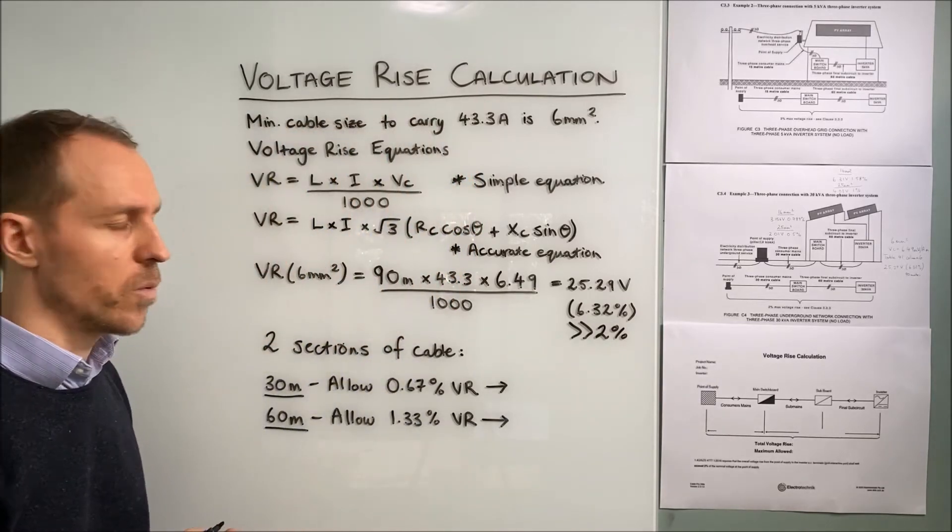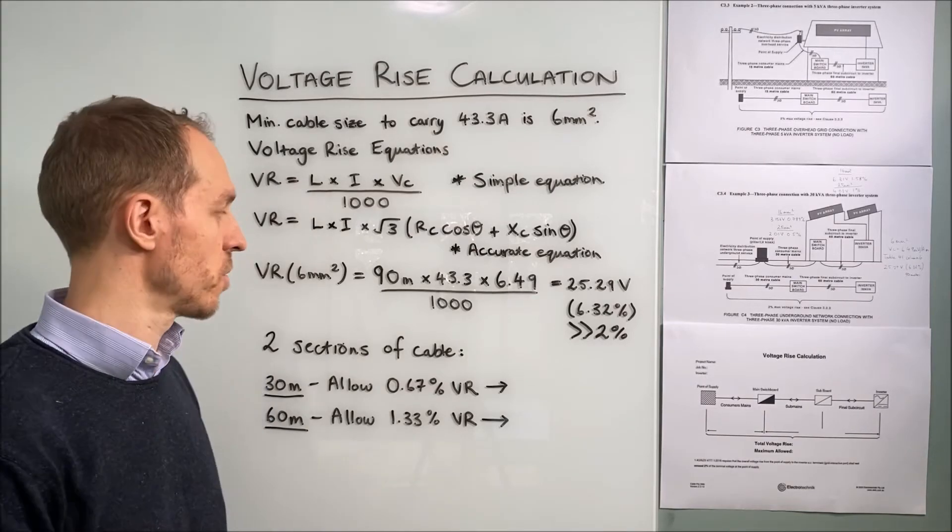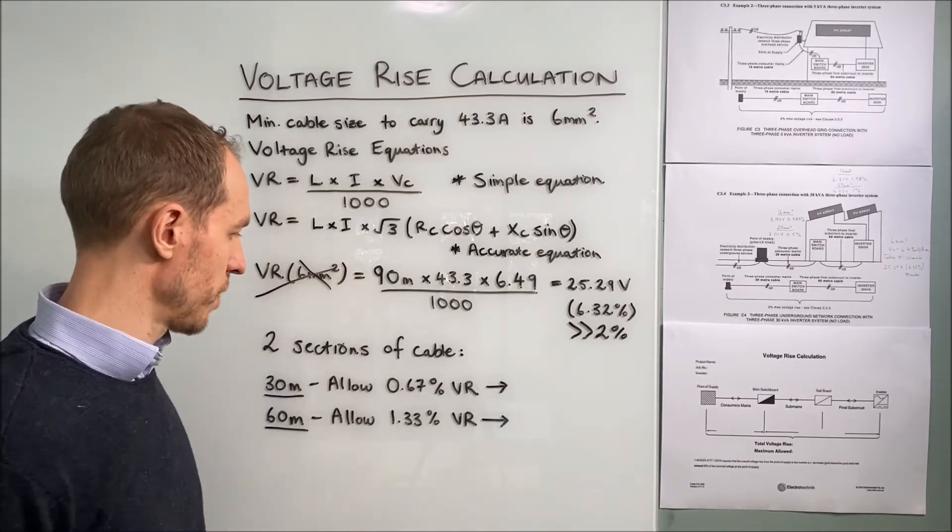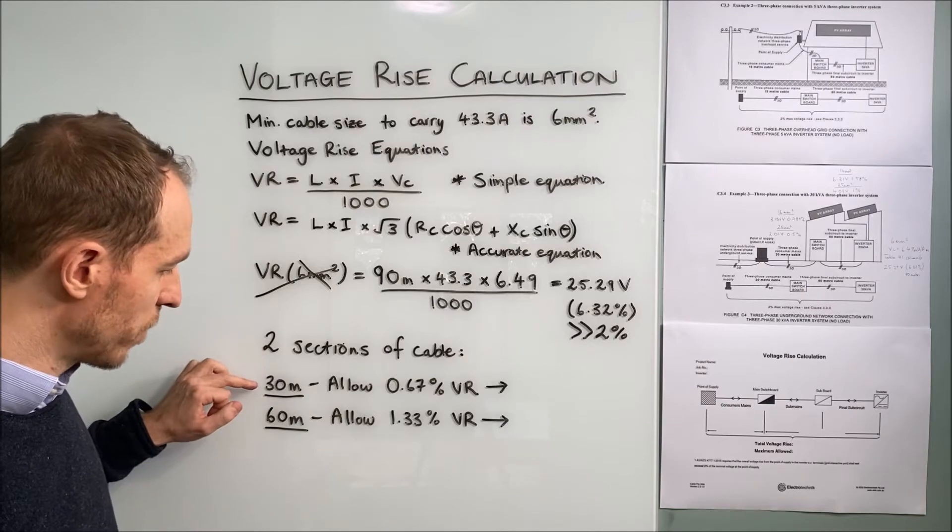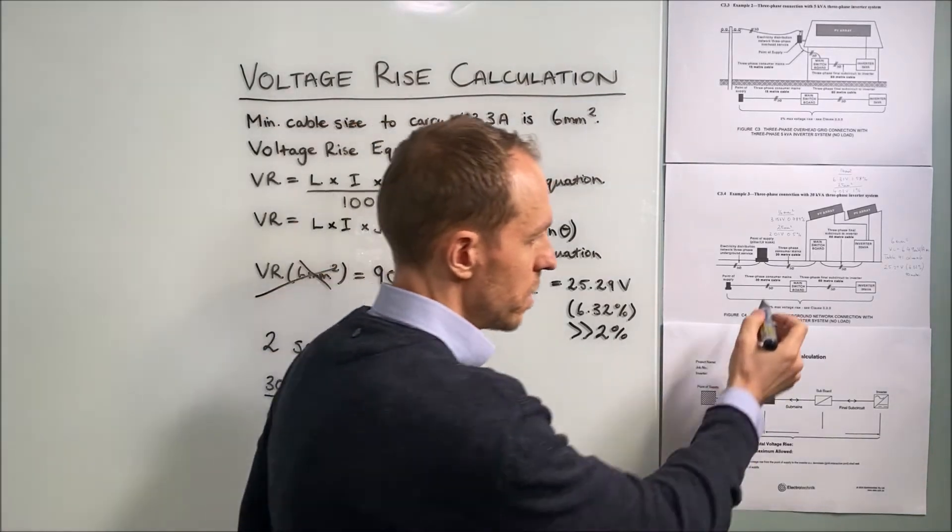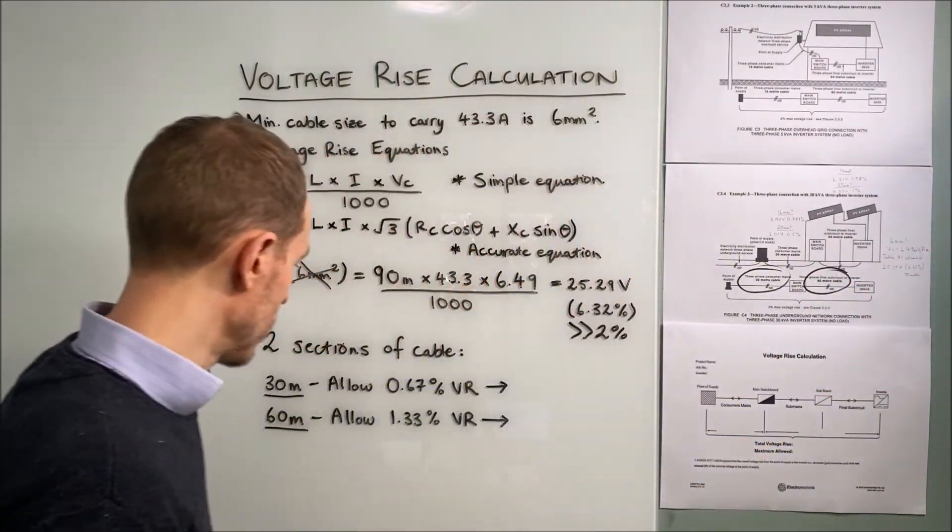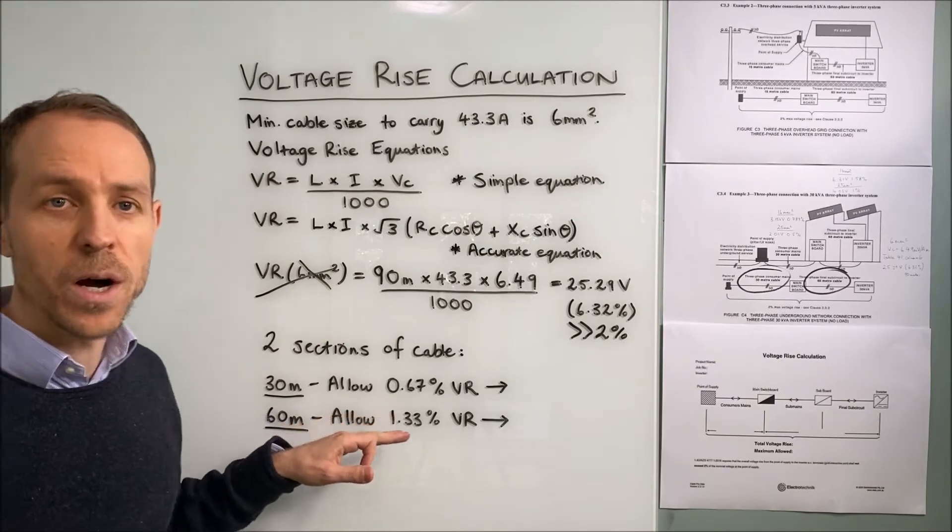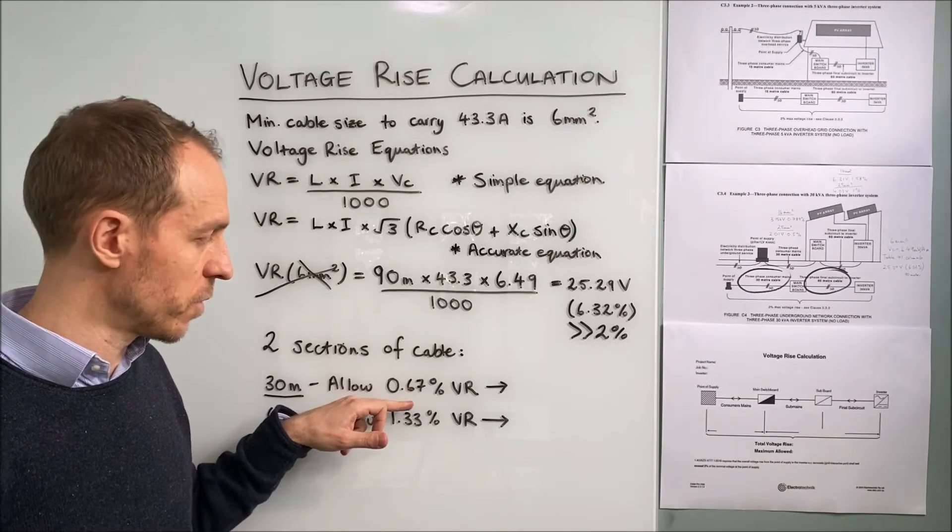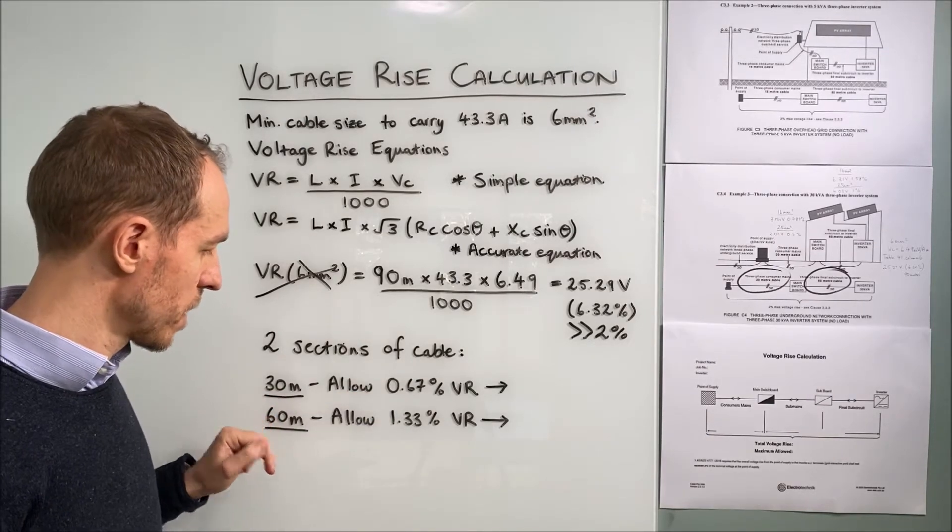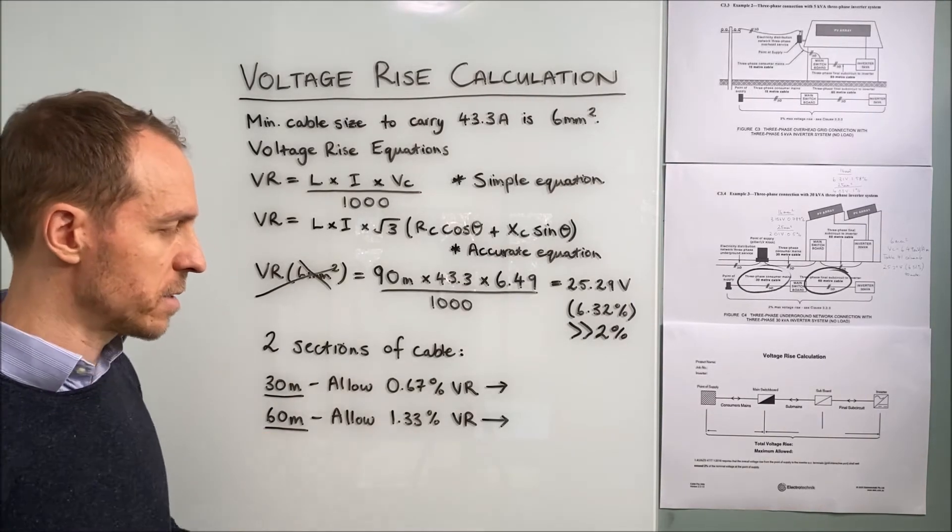So we know we must use a cable size to meet voltage rise requirements which is much greater than 6 square millimeters. We can't use 6 square millimeters. So we'll work it out based on the two sections. Again we've got a 30 meter section and a 60 meter section of cable. So if we divide our 2% up we can allow 0.67% voltage rise for the first section and 1.33% voltage rise for the 60 meter section.